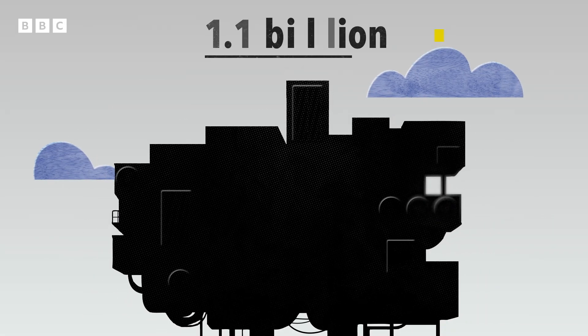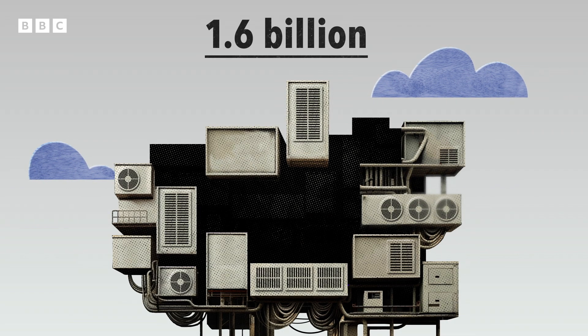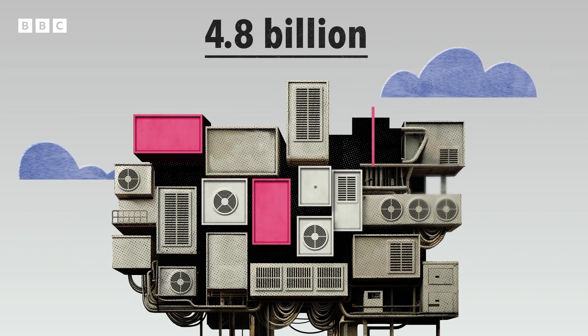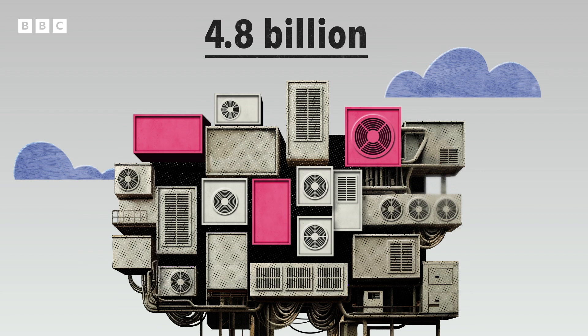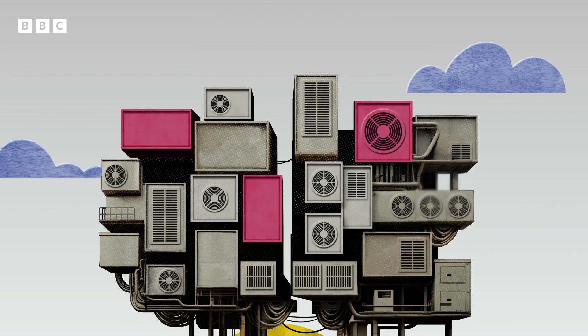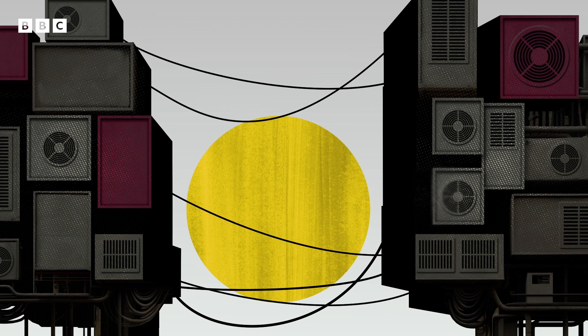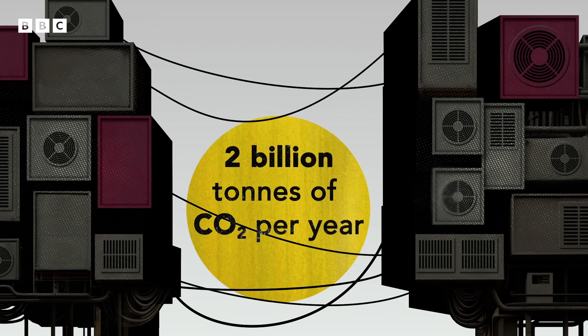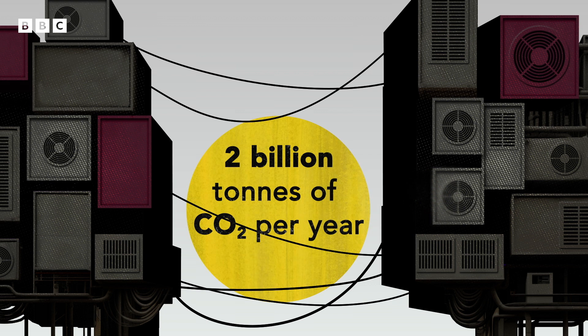There are currently around 1.6 billion air conditioners in the world, and that number is expected to triple by 2050, where 10 new units will be installed every second for the next three decades. At that point, emissions from powering all that air conditioning could be as high as 2 billion tonnes of CO2 a year, about the same as India produces now.